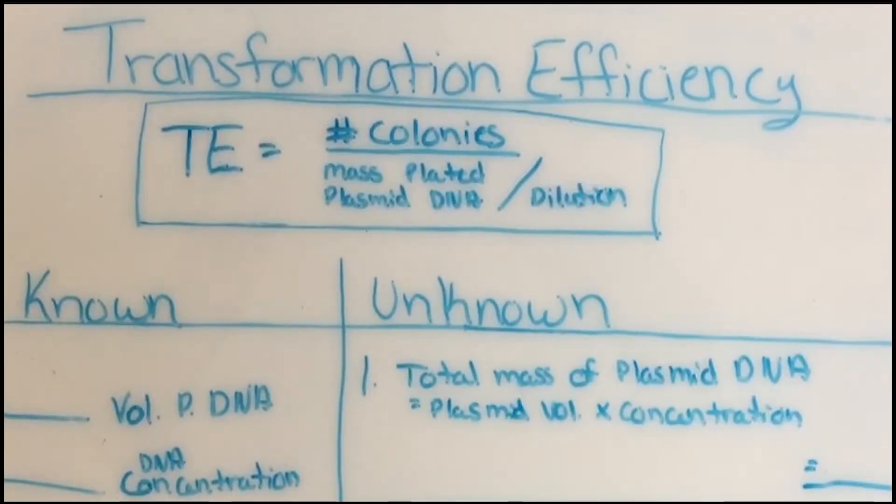Transformation efficiency is just a way of measuring how well or how efficiently your cells can take up DNA, and it's expressed as the number of transformants per microgram of your plasmid DNA.